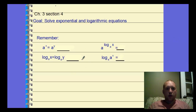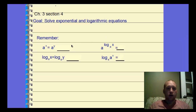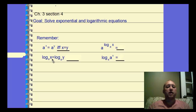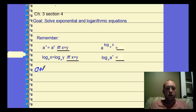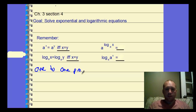Let's first recall some of the basic properties. If we have a to the x equals a to the y, then x equals y — this is the one-to-one property of exponents. The same thing is true if you have log base a of x equal log base a of y, then x has to be equal to y. Those two are known as the one-to-one property for solving.